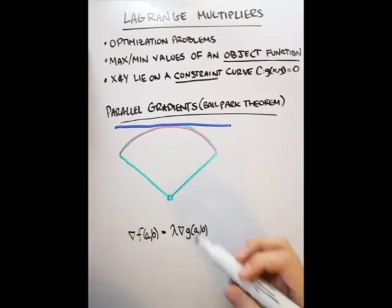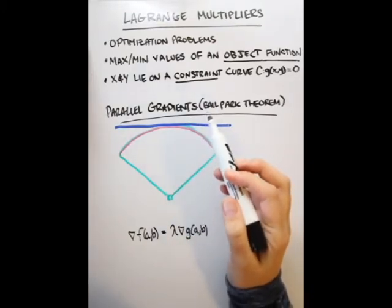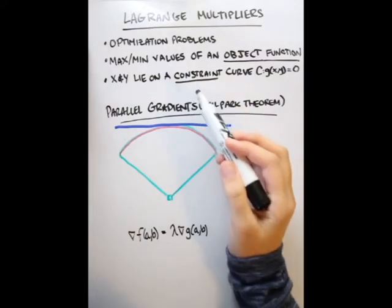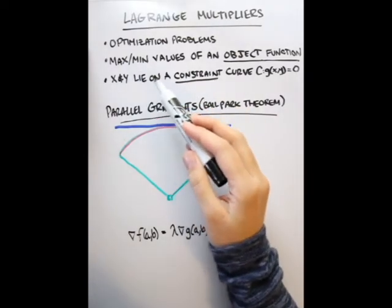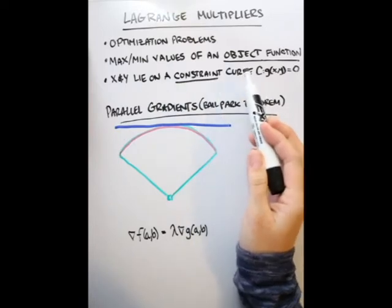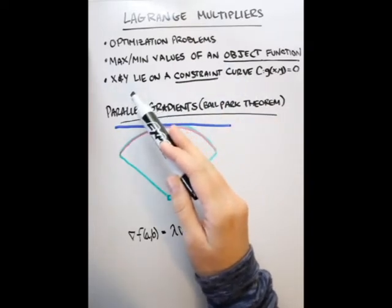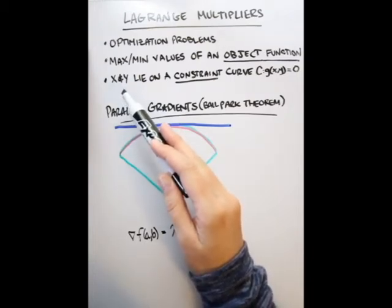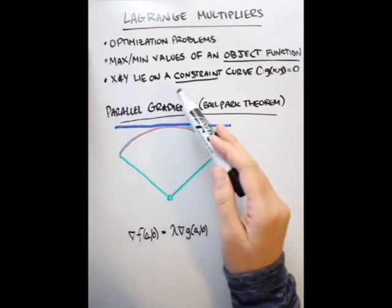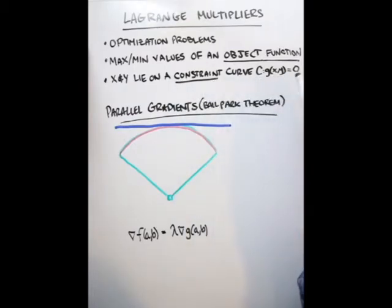In this video, we're going to be talking about Lagrange multipliers. You'll be using Lagrange multipliers on optimization problems where you're looking for maximum or minimum values of an object function. There is an additional condition where you have a restriction on your independent variables, x and y — they must lie on what's called a constraint curve, and your constraint curve is of the form g(x, y) = 0.